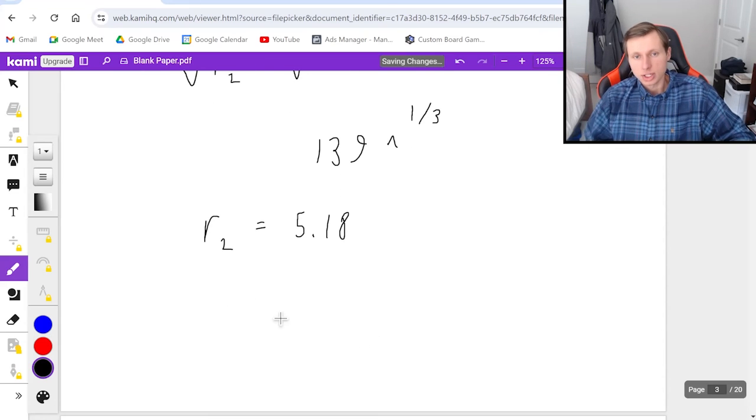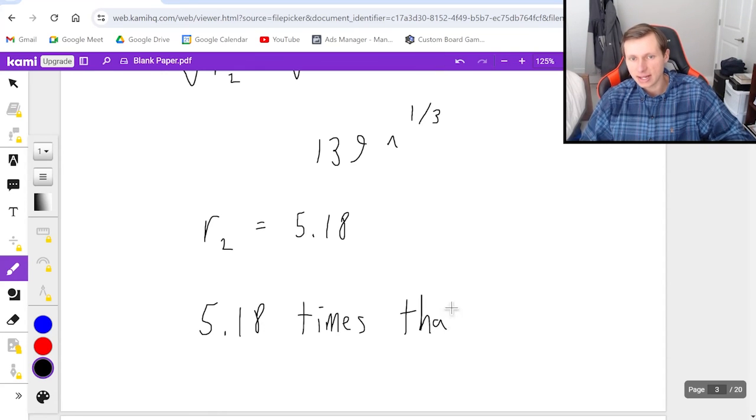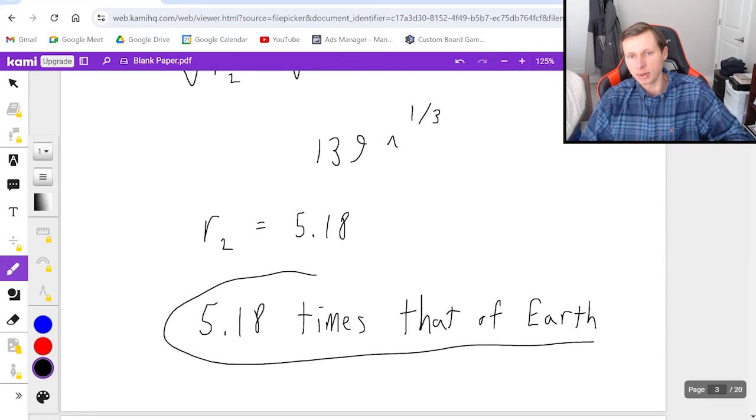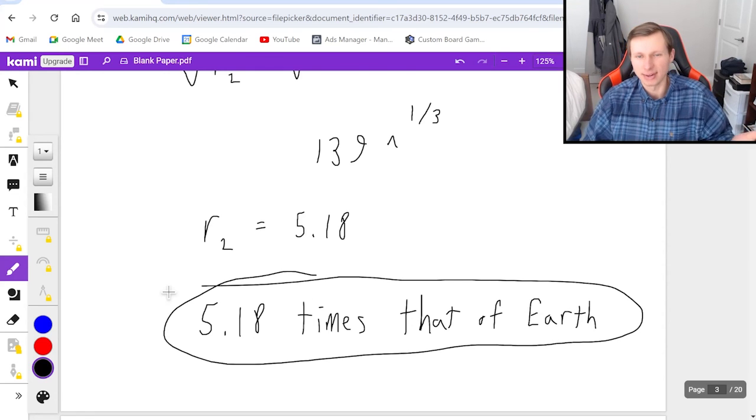So in other words, how far is Jupiter from the sun? 5.18 times that of Earth. And I'm not looking for a number in meters or anything—I just wanted to compare it to Earth, and it's five times farther away.